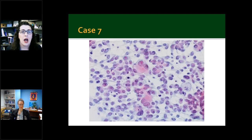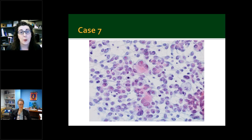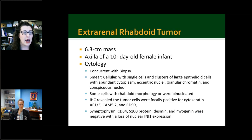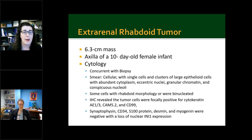Case seven is another beautiful case. A cellular smear with dispersed single cells having epithelioid to rhabdoid morphology — eccentric nuclei with finely granular chromatin and conspicuous nucleoli. Some larger cells show binucleation, apoptotic bodies in the background, and mitoses. This was an extra-renal rhabdoid tumor presenting as a 6.3 centimeter mass in the axilla of a 10-day-old female infant. The cytology diagnosis was made concurrently with surgical pathology. IHC revealed tumor cells focally positive for cytokeratin AE1/AE3-CAM and CD99, with listed stains negative and loss of nuclear INI-1 expression.